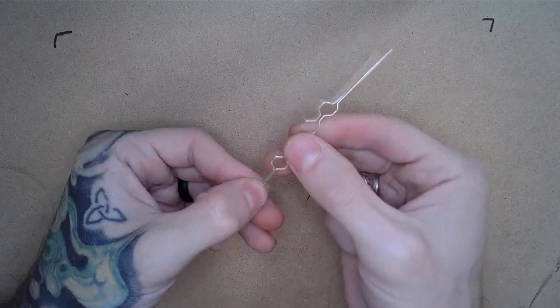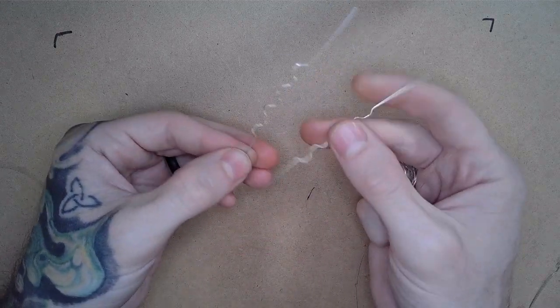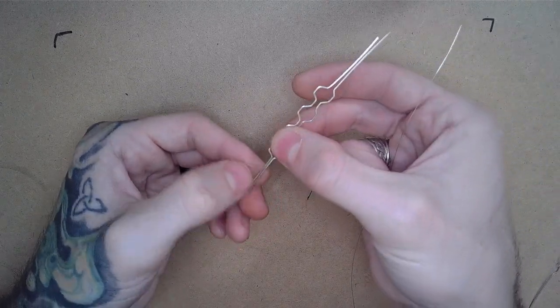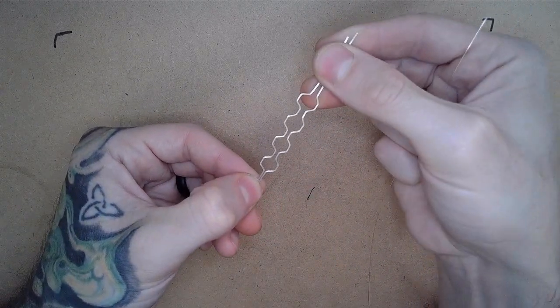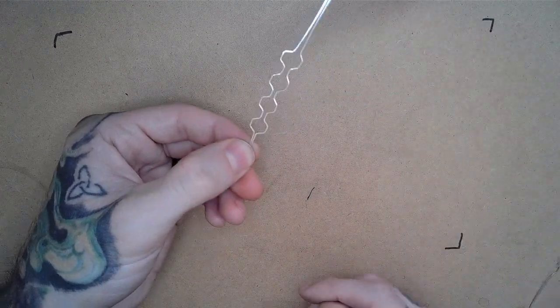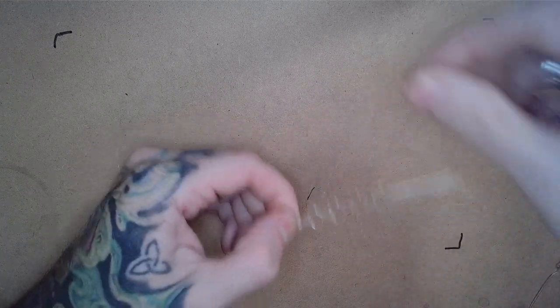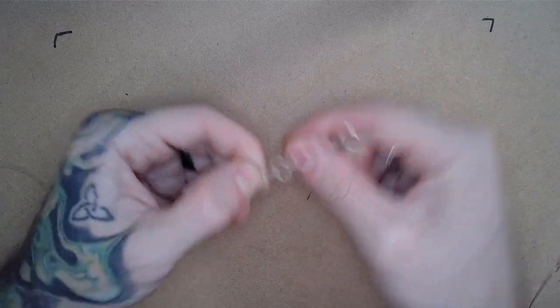I'm going to start by taking two of my squares and aligning them next to each other so that you can begin to see how the hexagons will form. I'll then take my 28 gauge wire and wrap it three times around the base.